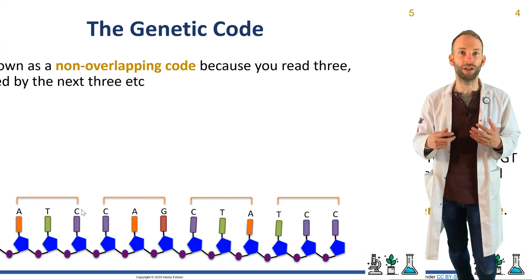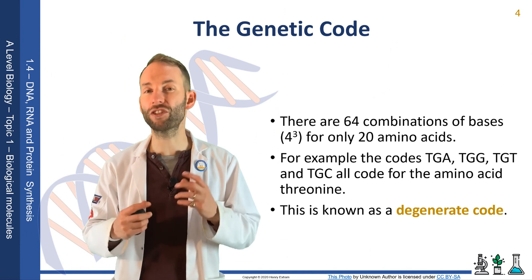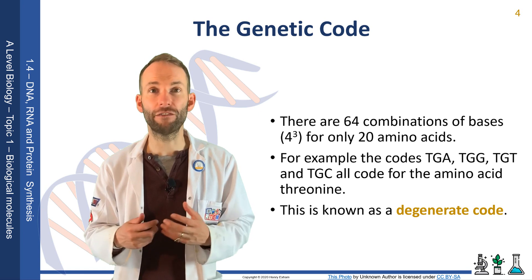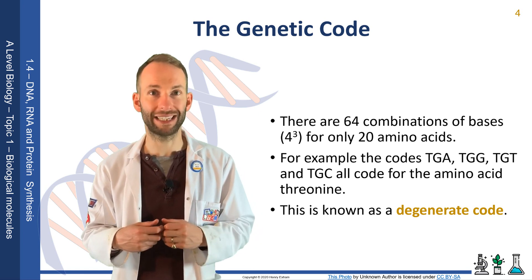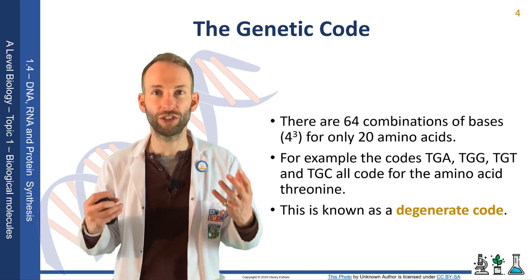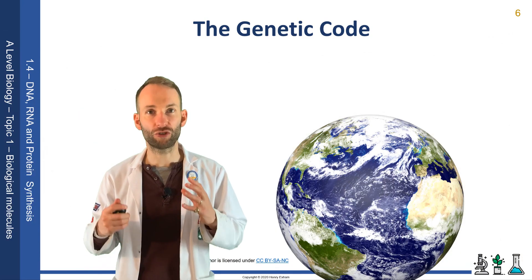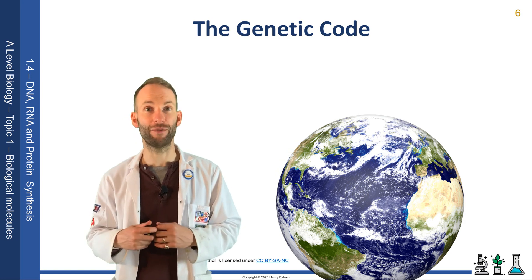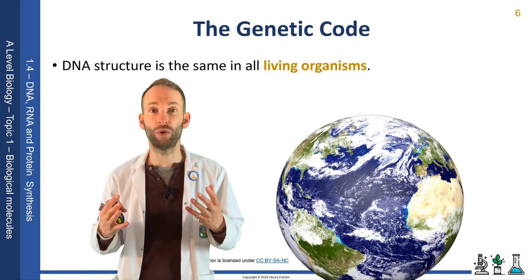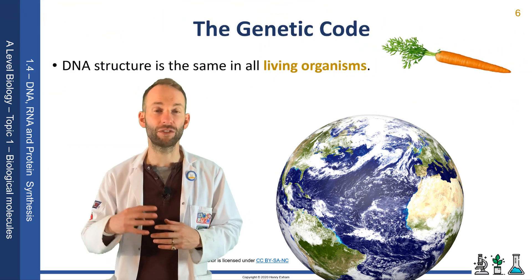The fact that the code is a degenerate code is a good thing, because what it means is that if you get a mutation — if you get a small change in the DNA sequence, if one of the bases changes — it might actually have no effect at all, because it will still code for the same amino acid. So it actually gives a bit of inbuilt flexibility for mutation without huge changes always happening. DNA structure is the same in all living organisms. The triplet code works the same in all living organisms.